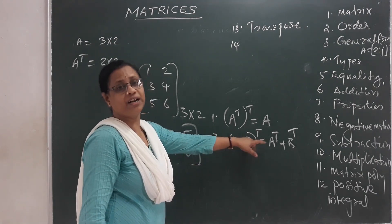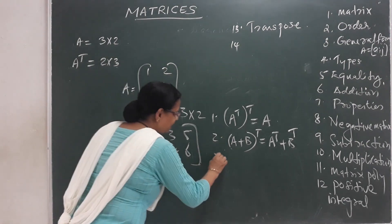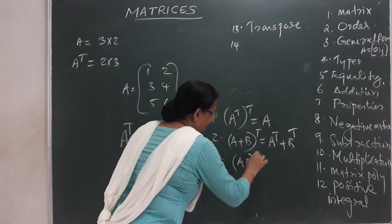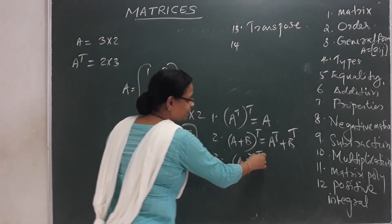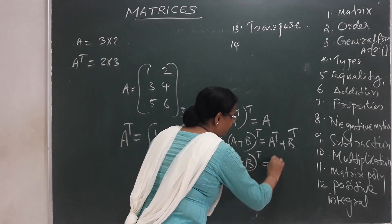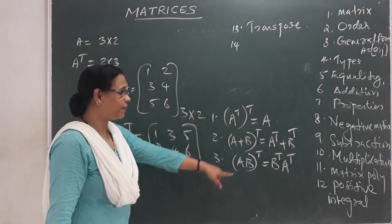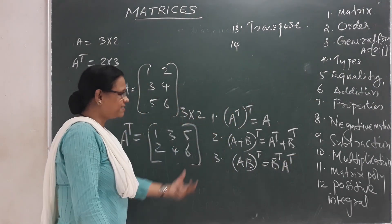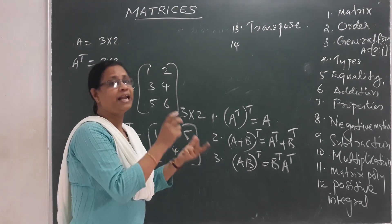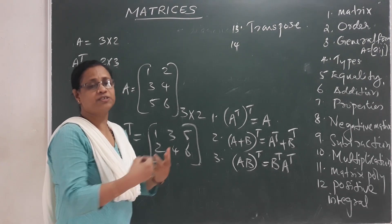The second property: A plus B whole Transpose is equal to A Transpose plus B Transpose. The third property involves the Reversal law: AB Transpose is equal to B Transpose into A Transpose. This is called the Reversal law. The scalar property: we can distribute it in any order, in any matrix.